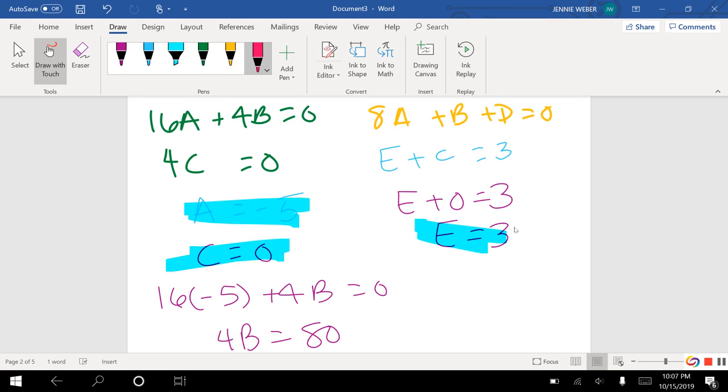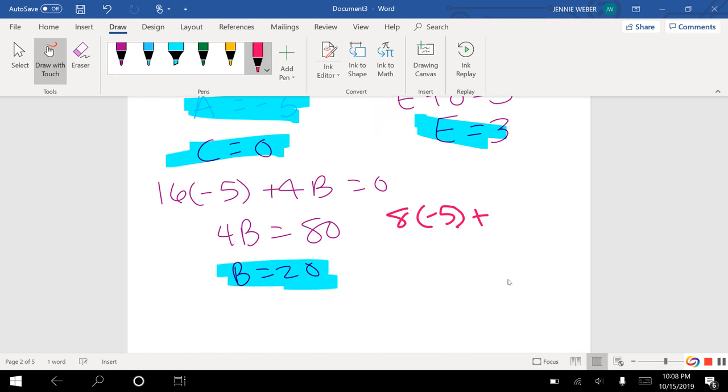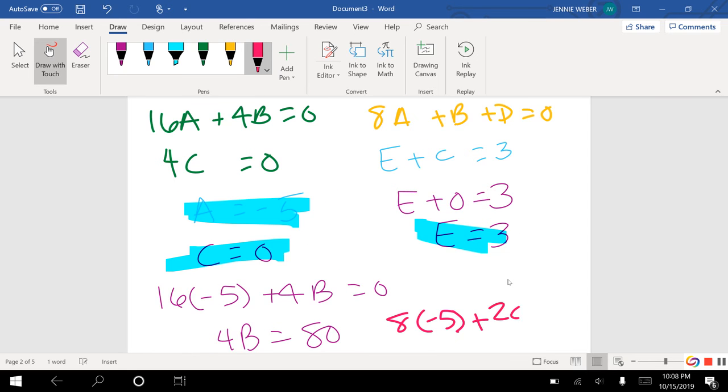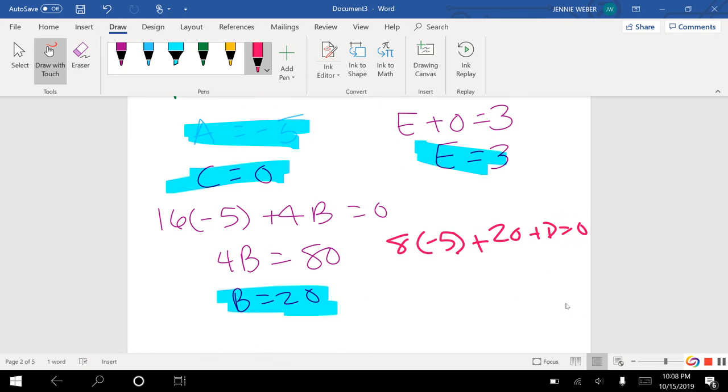So over here, 8 times negative 5 plus, what did I just say B was, 20, plus D equals 0. So that's negative 40 plus 20 plus D equals 0. So negative 20 plus D equals 0, D equals 20. There's my last answer.